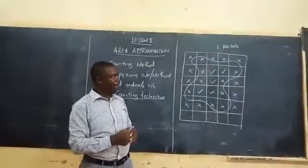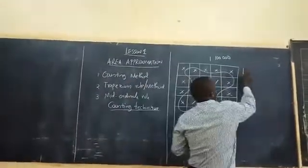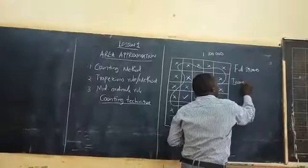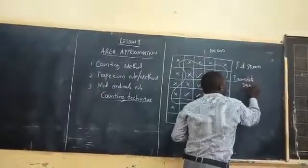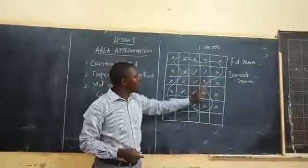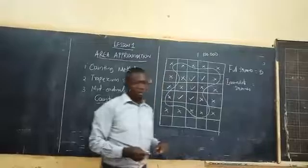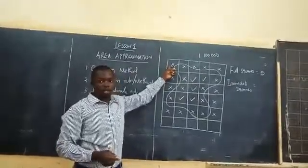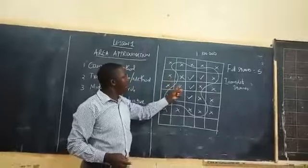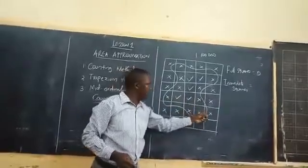So we are going to count the number of full squares now. The number of full squares — counting together: one, two, three, four, five — so there are five full squares. The number of incomplete squares: one, two, three, four, five, six, seven, eight, nine, ten, eleven, twelve, thirteen, fourteen, fifteen, sixteen, seventeen, eighteen, nineteen, twenty — there are twenty incomplete squares.